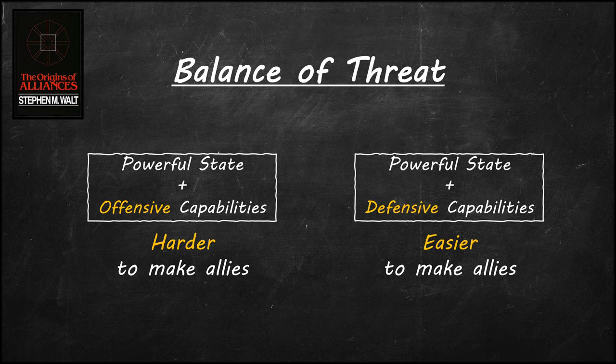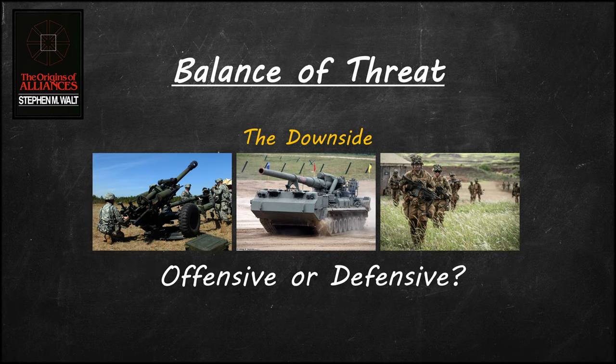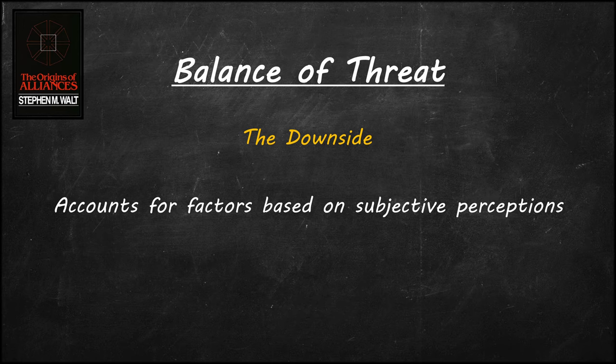The simple shift from analyzing power to analyzing threat perception makes realism more flexible as a theoretical framework. However, there is a downside to this change. Walt acknowledges in his book that it is not easy for states to determine which military capabilities are offensive or defensive. It also means that scholars would have a more difficult time applying this theory to empirical cases. The balance of threat theory can be more versatile and lead to a more nuanced analysis of state capabilities, but it brings with it problems with clarity. That is to be expected when a theory accounts for factors based on subjective perception.